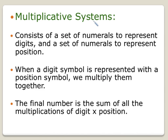Now we want to talk about a multiplicative system. It's going to consist of a set of numerals to represent digits, and then a set of numerals to represent position. When a digit symbol is represented along with a position symbol, we multiply them together — so it's the digit times the position. The final number is the sum of all those multiplications.